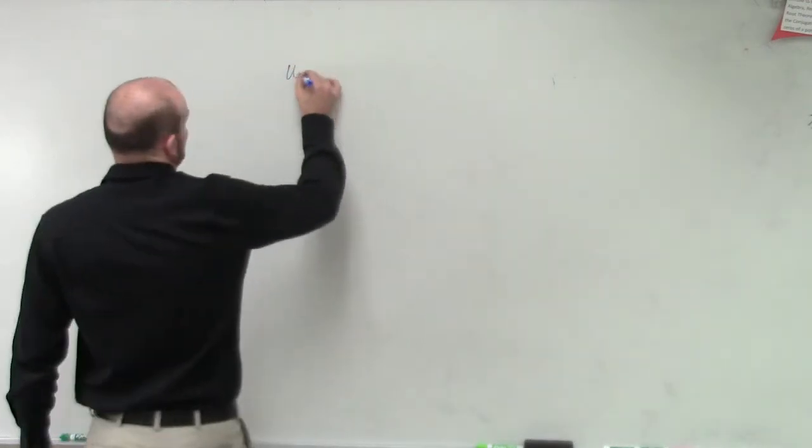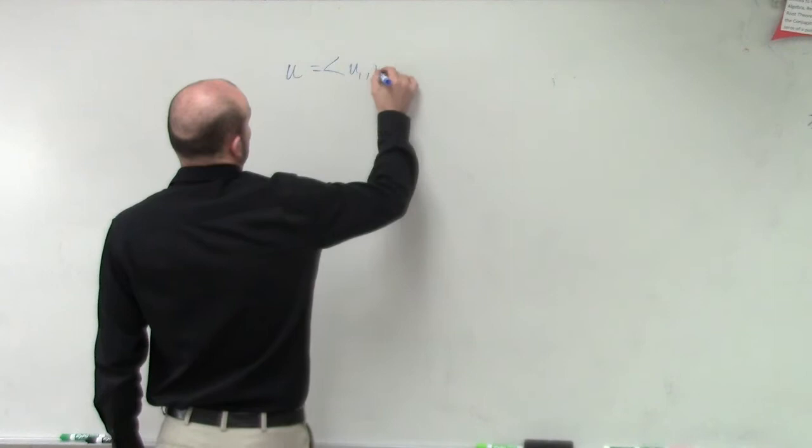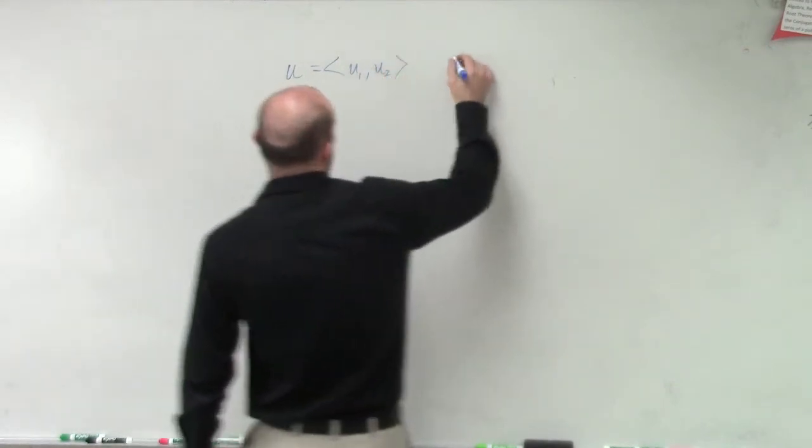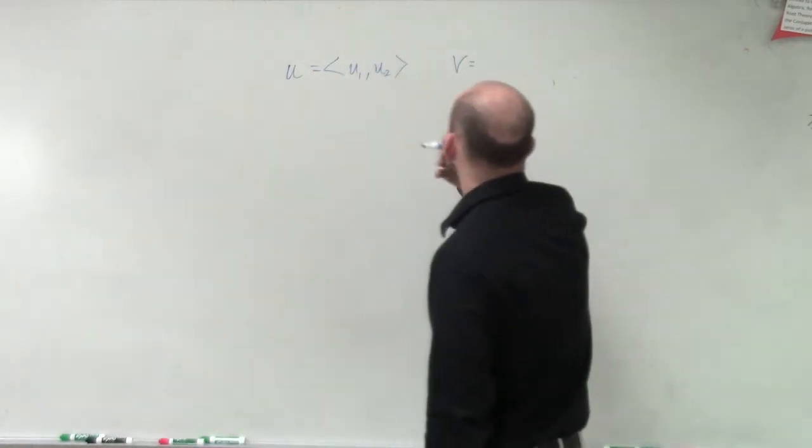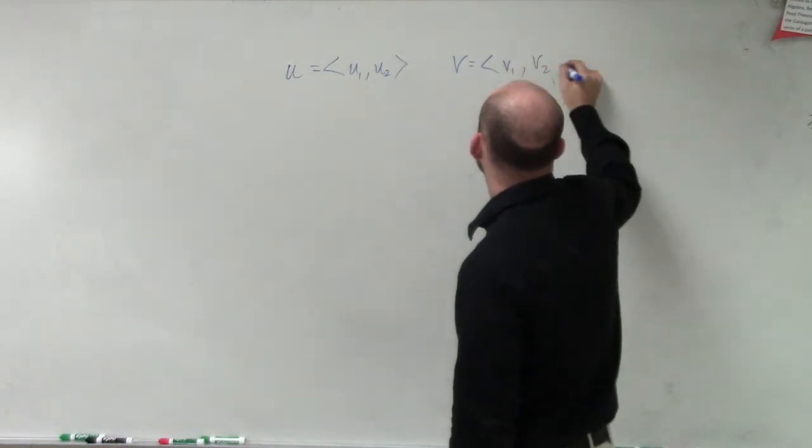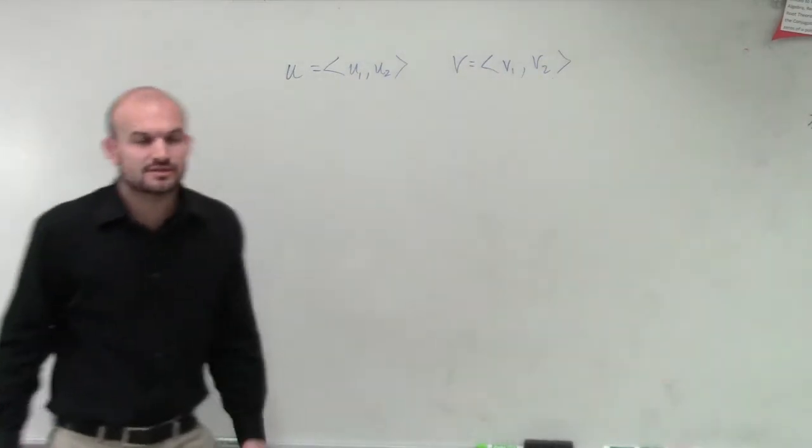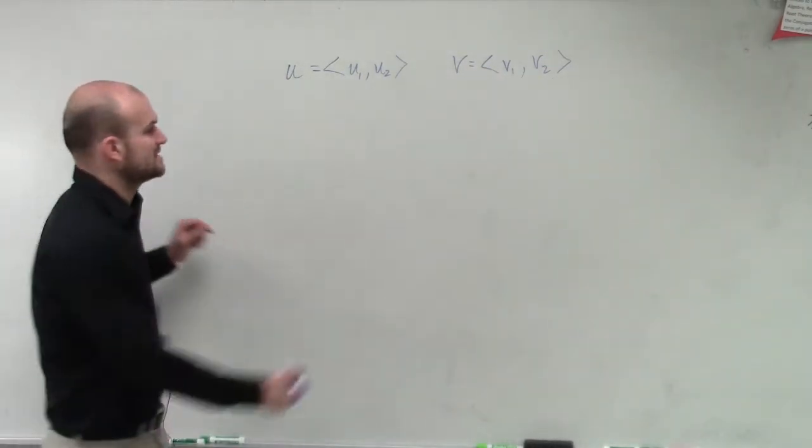So let's say we have two vectors, u and we have v. And let's say u and v are two component vectors, two vectors on the same plane.